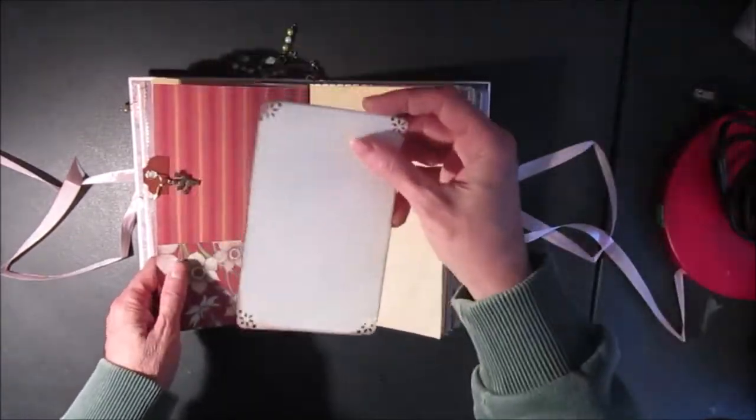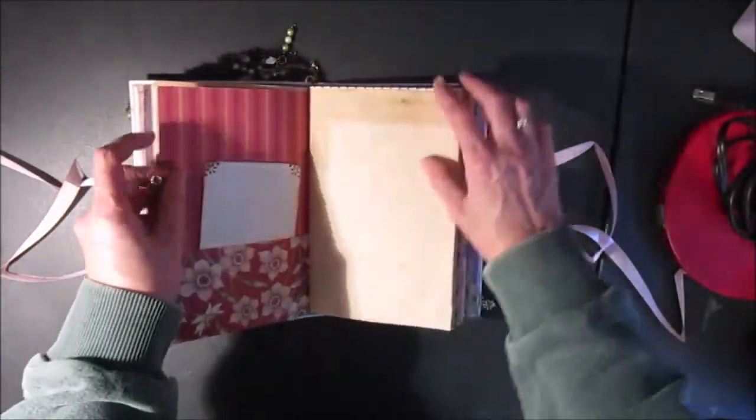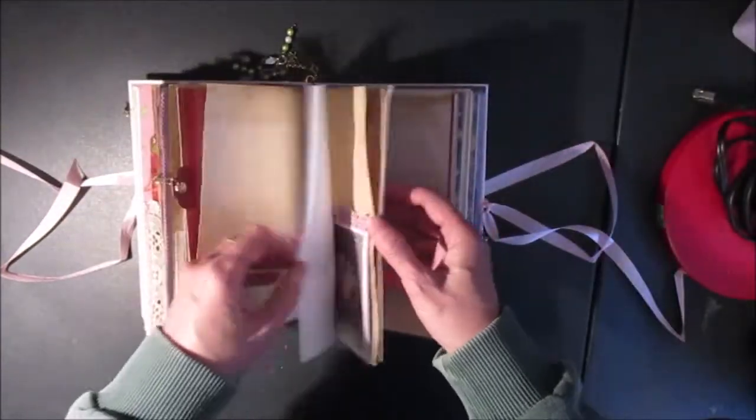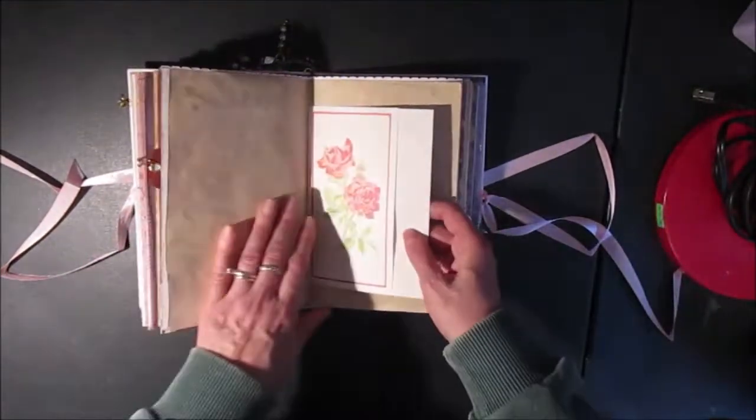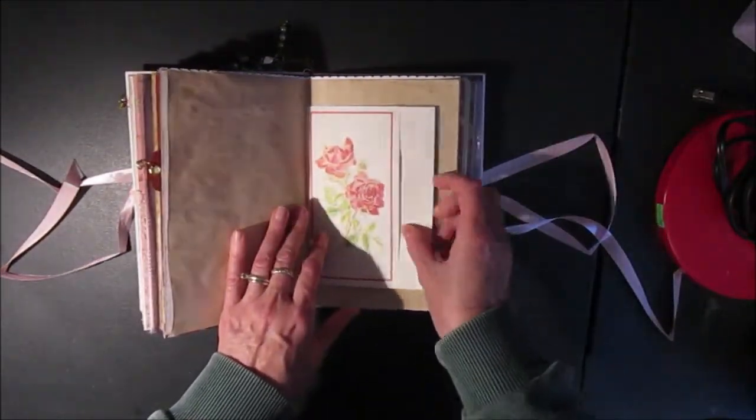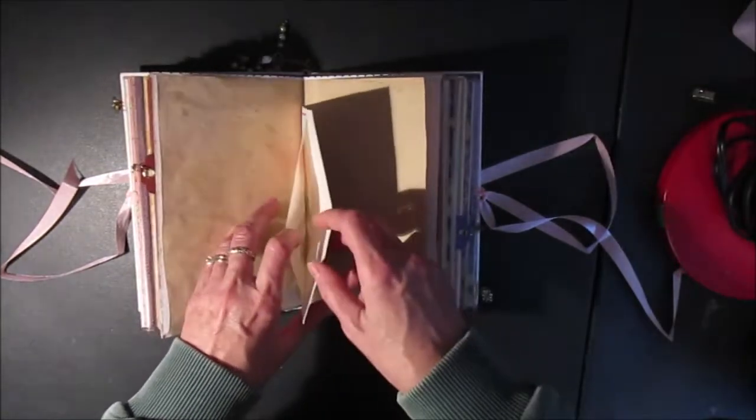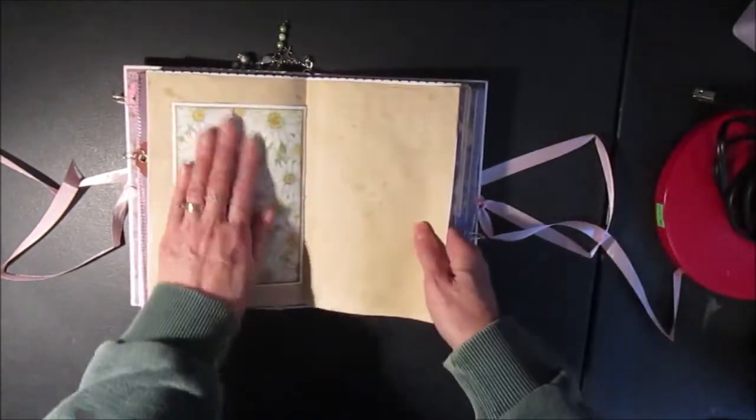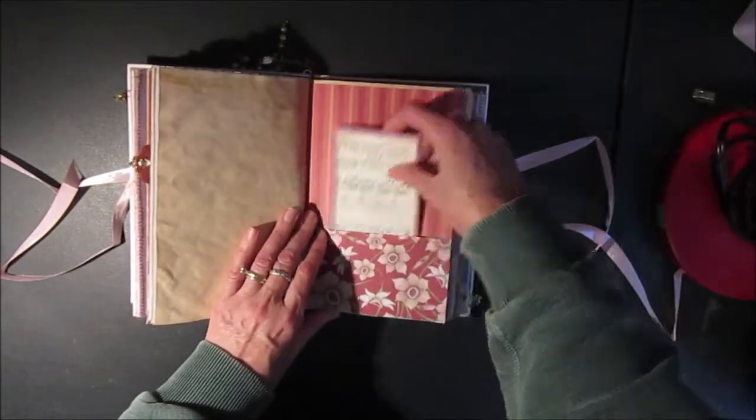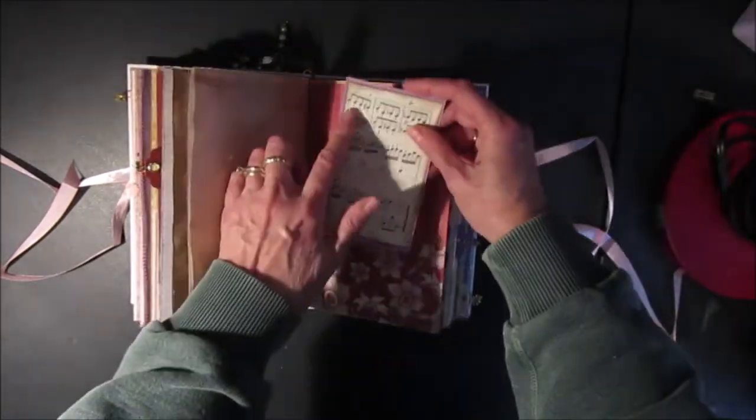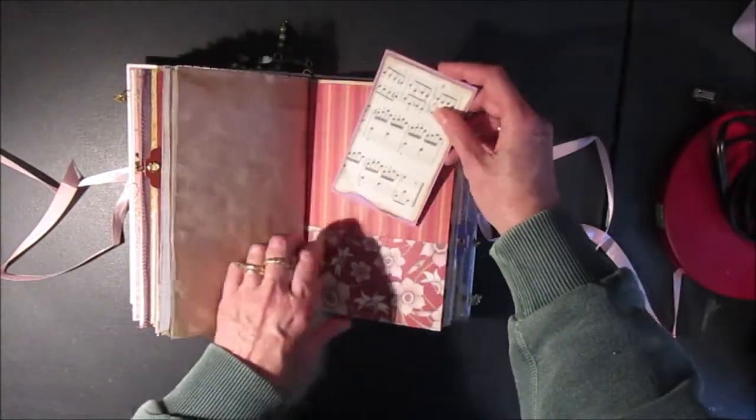And there's another pocket here. Another one of these flaps. Another envelope. And you can tuck something inside there and that's daisies on the back.